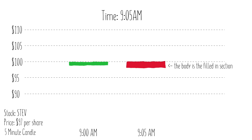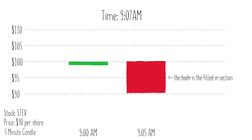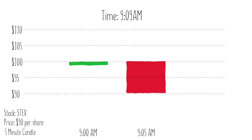The body is a range of movement from the open. So since we dropped $3 in the same minute, the body will span across those $3. It's now 9:07 am and Stev drops even lower to $90. Now the body is even larger and shows a huge red range of a $10 drop.